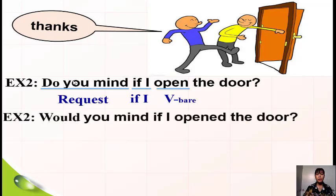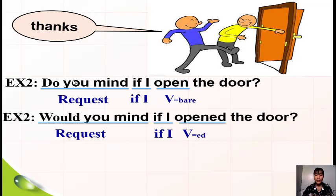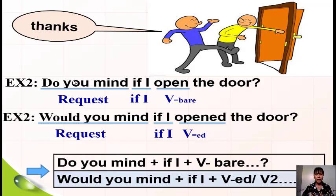'Would you mind if I opened the door?' Phân tích: vẫn là 'Would you mind' là phần request, cộng cho 'if I', cộng cho động từ thêm '-ed'. Ngoài cách thêm '-ed', chúng ta còn một cách nữa là sử dụng phân từ 1, hay còn gọi là động từ ở cột thứ 2. Rút công thức: 'Do you mind' cộng cho 'if I' cộng cho động từ nguyên mẫu. 'Would you mind' cộng cho 'if I' cộng cho động từ thêm '-ed' hoặc động từ ở cột thứ 2.